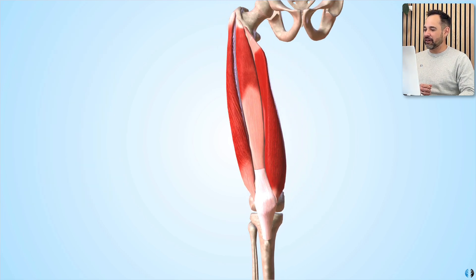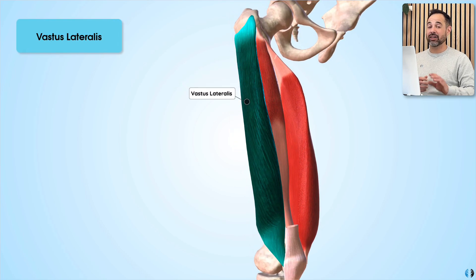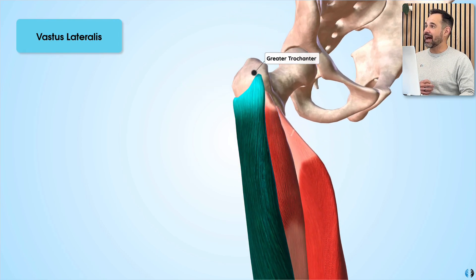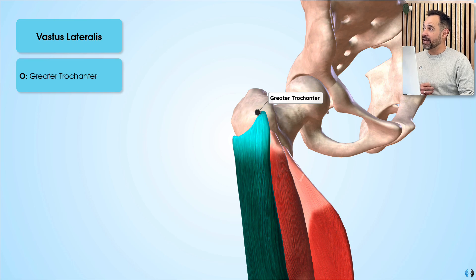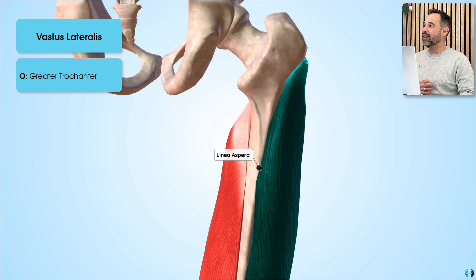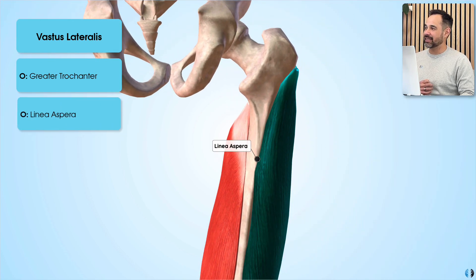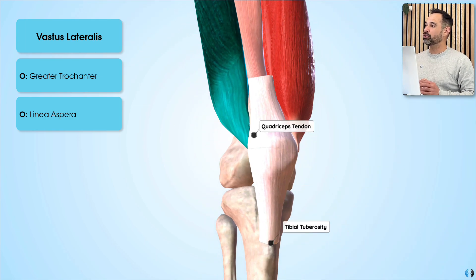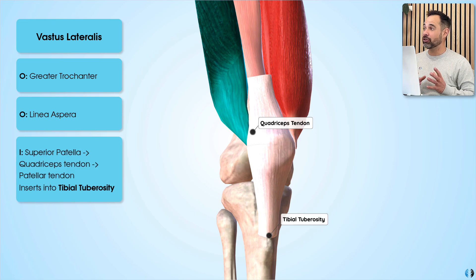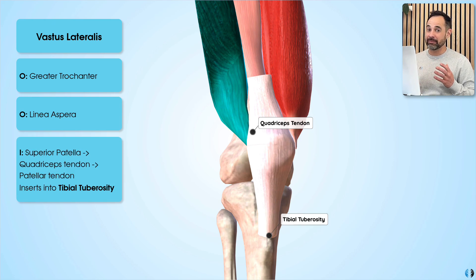Next we have vastus lateralis, located on the lateral side of the femur. This muscle has its origin from the greater trochanter of the femur, as well as a secondary attachment at the linea aspera. Like the others, it also inserts into the quadriceps tendon, which then blends into the patella tendon, inserting into the tibial tuberosity.